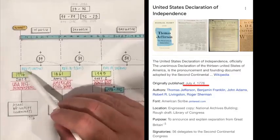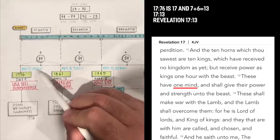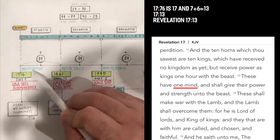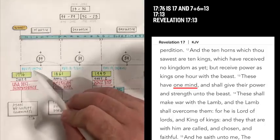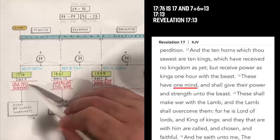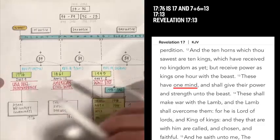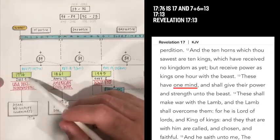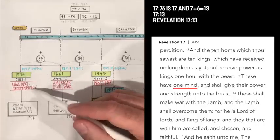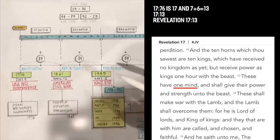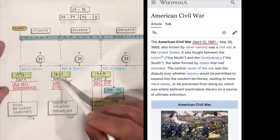17.76. What is that? 17 and 7 plus 6 is 13. So, Revelation 17:13 says, These have one mind and shall give their power and strength unto the beast. That's a good representation. Might not be the exact model, but very similar.